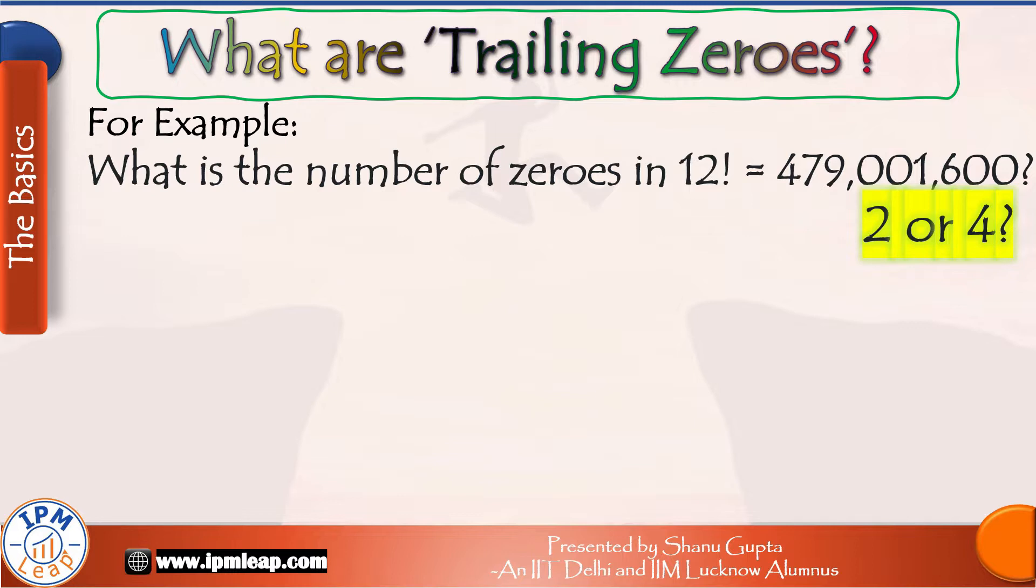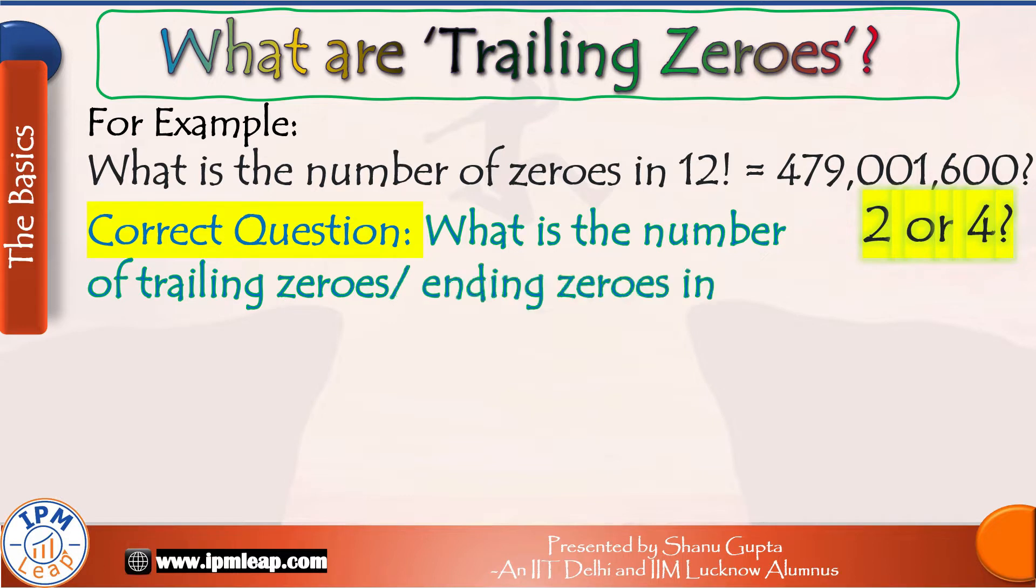So keep that in mind. The correct question is, what is the number of trailing zeros or ending zeros in 12 factorial?